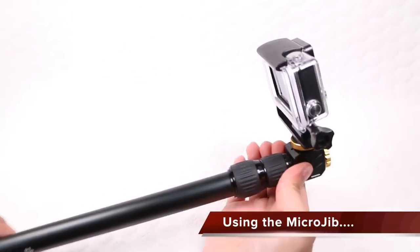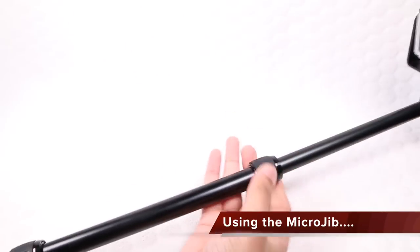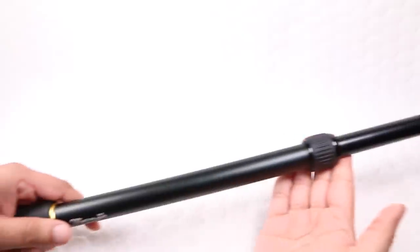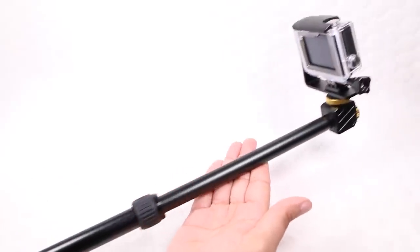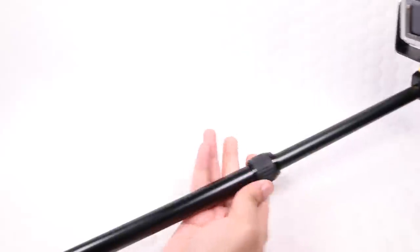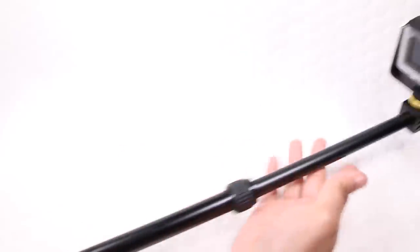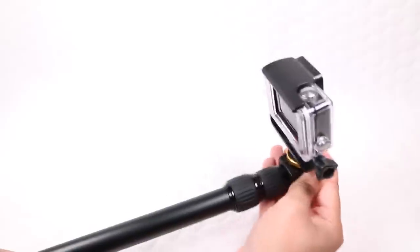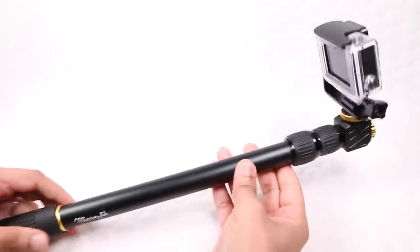Putting the Microjib to use is as simple as the setup. As it stands, the unit can be used just like any other standard extension pole, thanks to that easy to use twist locking mechanism and smooth extension, providing the ability to extend from 16 inches all the way up to 33 inches in length.